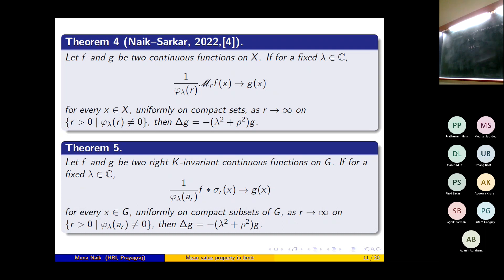I will prove this theorem at the group level. The theorem is: let f and g be right K-invariant continuous functions on G. If for fixed λ in ℂ, the limit as r → ∞ of (1/φ_λ(a_r)) · (f * σ_r)(x) converges to g(x) for every x in G uniformly on compact subsets of G, as r → ∞ on the set where φ_λ(a_r) ≠ 0, then g is an eigenfunction of Δ with eigenvalue -(λ² + ρ²). The idea is to show that g * σ_t = φ_λ(a_t) g for sufficiently small t, and then apply the corollary.